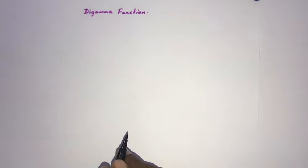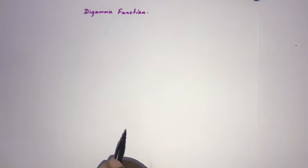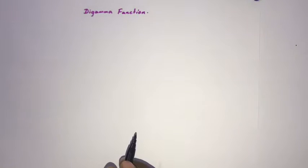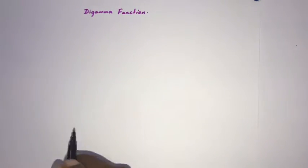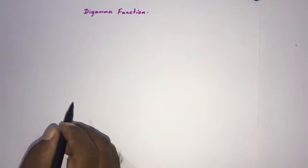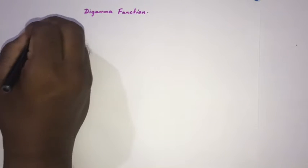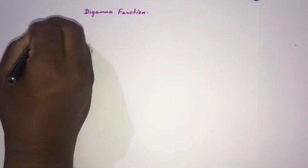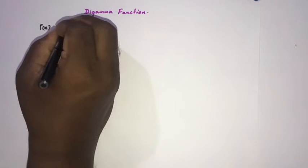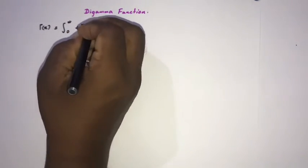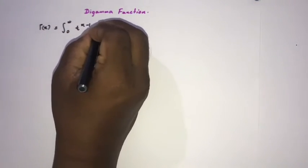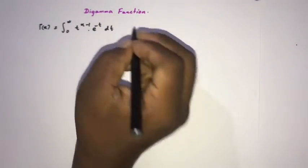Hello everyone, welcome to the mathematics channel. In this video we are going to talk about the digamma function. I hope to do a video series on the digamma function — this is the first part. In mathematics, the digamma function is defined as the logarithmic derivative of the gamma function. The gamma function is: Γ(x) = integral from 0 to infinity of t^(x−1) times e^(−t) dt.